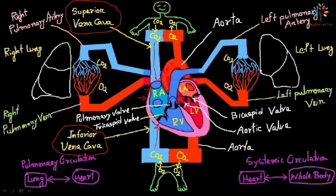Once the right atrium is filled with blood, the right atrium contracts. There is a valve called the tricuspid valve — the blood from the right atrium passes through the tricuspid valve into the right ventricle. Once the blood reaches the right ventricle, the right atrium relaxes. During relaxation, blood from the right ventricle cannot go back to the right atrium because of the tricuspid valve. It is known as the tricuspid valve because it has three flaps, and it prevents backflow of blood from the right ventricle to the right atrium.